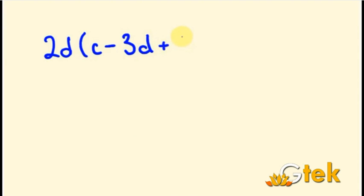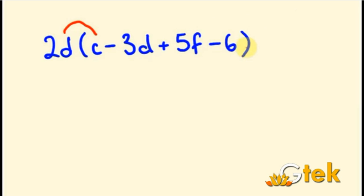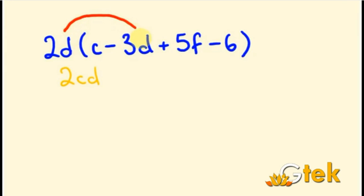Let's see another example. 2d open bracket c minus 3d plus 5f minus 6. Now we have to multiply 2d with each term. First 2d into c, then 2d into 3d, then 2d into 5f, and 2d into 6. But in between the signs are different, so you should be very careful while writing the answer. So 2d into c is 2cd, written in alphabetical order. And the sign is minus. So 2d into minus 3d gives minus 6d squared.